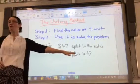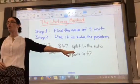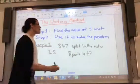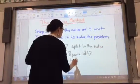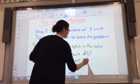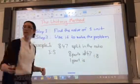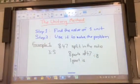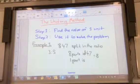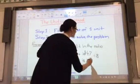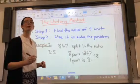So 8 parts is $47. If I divide by 8, I get what one part is. So if I divide it by 8, what did I get, Bailey? 5.875. It's 5.875.